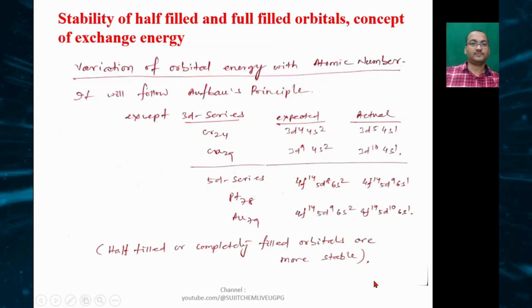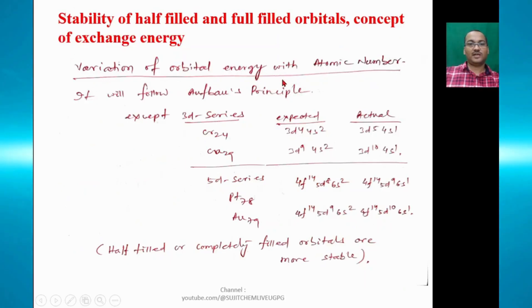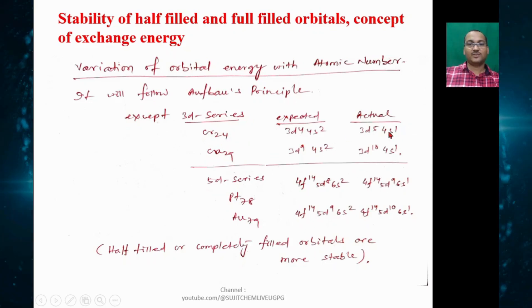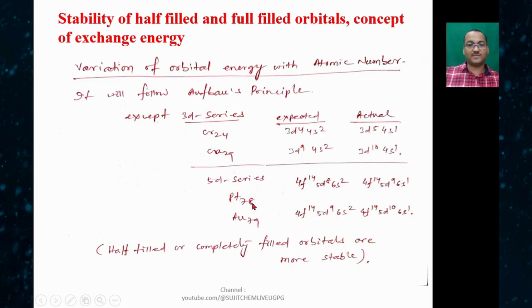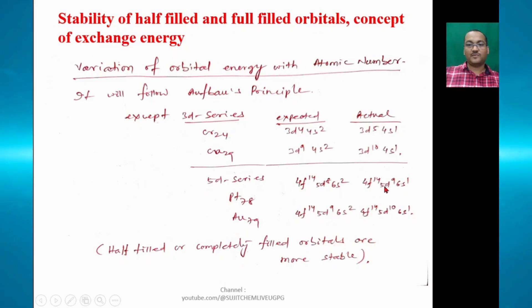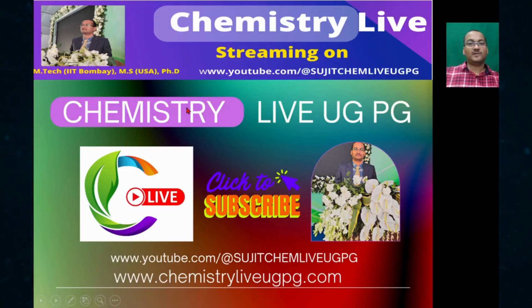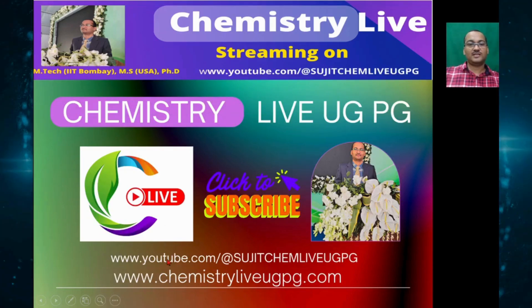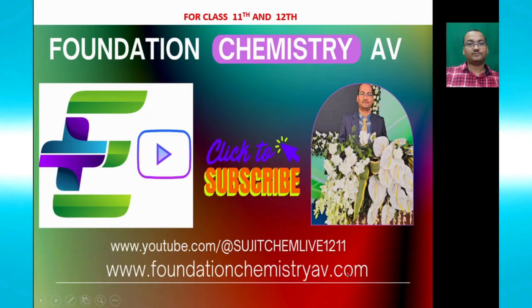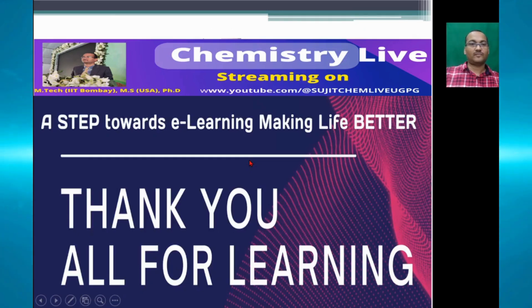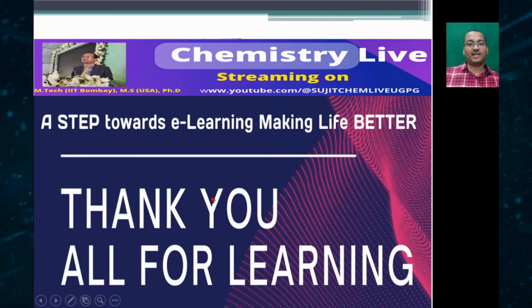Regarding variation of orbital energy with atomic number following the Aufbau principle: for chromium (24) and copper (29), the actual configurations are 3d⁵ 4s¹ and 3d¹⁰ 4s¹. In the 5d series, platinum (78) actual is 4f¹⁴ 5d⁹ 6s¹ and gold (79) actual is 4f¹⁴ 5d¹⁰ 6s¹. This confirms that half-filled and completely filled orbitals are more stable. Please subscribe to Chemistry Live UGPG, also available at chemistrylivegupg.com. Thank you all for learning.